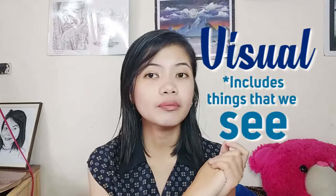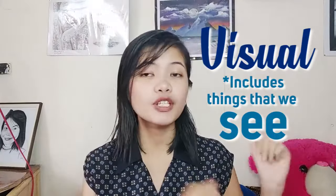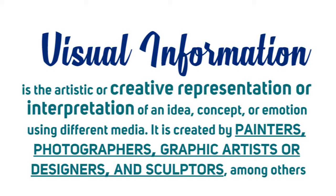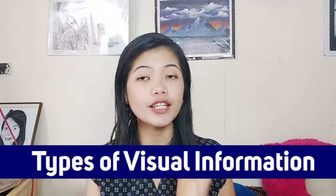When we say visual, it is anything that we can see — either with or without sound. So technically, visual information and media is anything that we can see. Visual information is the artistic or creative representation or interpretation of an idea, concept, or emotion using different media. It is created by painters, photographers, graphic artists or designers, and sculptors among others. Visual information is any content that we can see that represents or interprets an idea or concept. There are different types of visual information, and each uses various mediums and appeals to varied audiences.